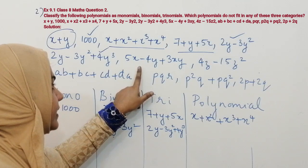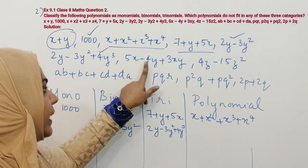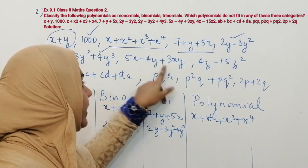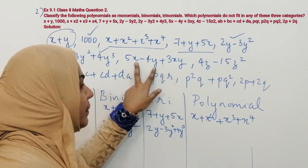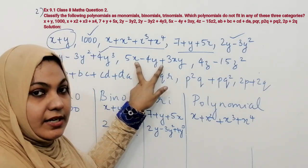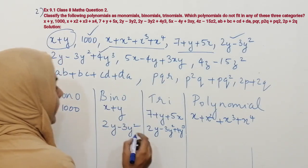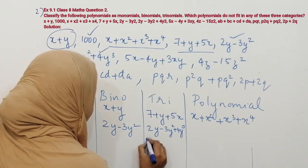The next one is 5x minus 4y plus 3xy. This is an algebraic expression comprising three terms, so it is also a trinomial.